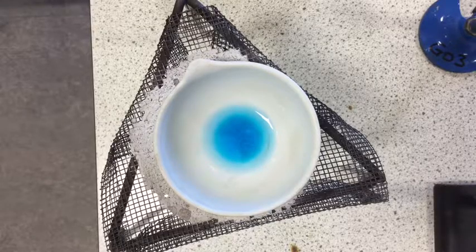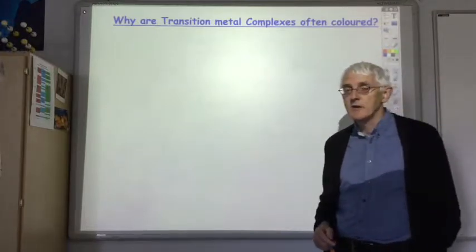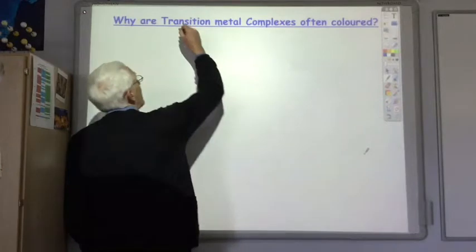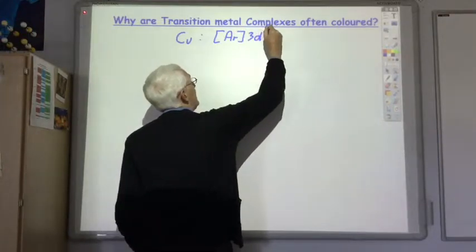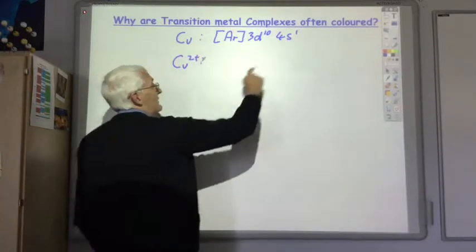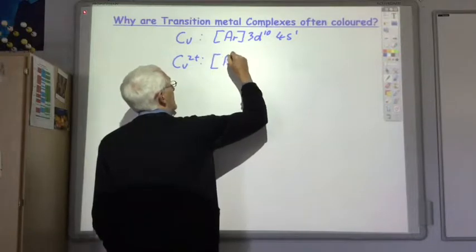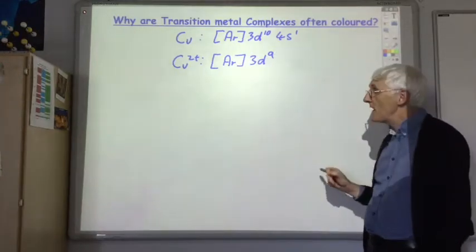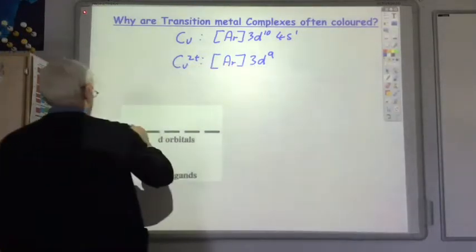So why are transition metal complexes often coloured? Let's continue using the Cu²⁺ ion as an example. If we look at the electronic configuration of the copper atom, it's 3d¹⁰ 4s¹. When it forms the Cu²⁺ ion, it loses the 4s¹ electron and one of the 3d¹⁰ electrons, so it becomes [Ar] 3d⁹.